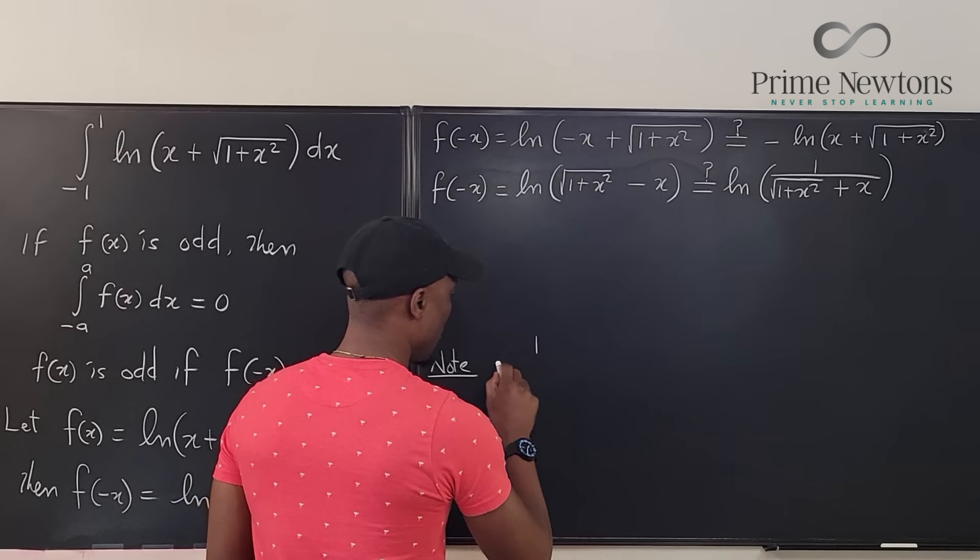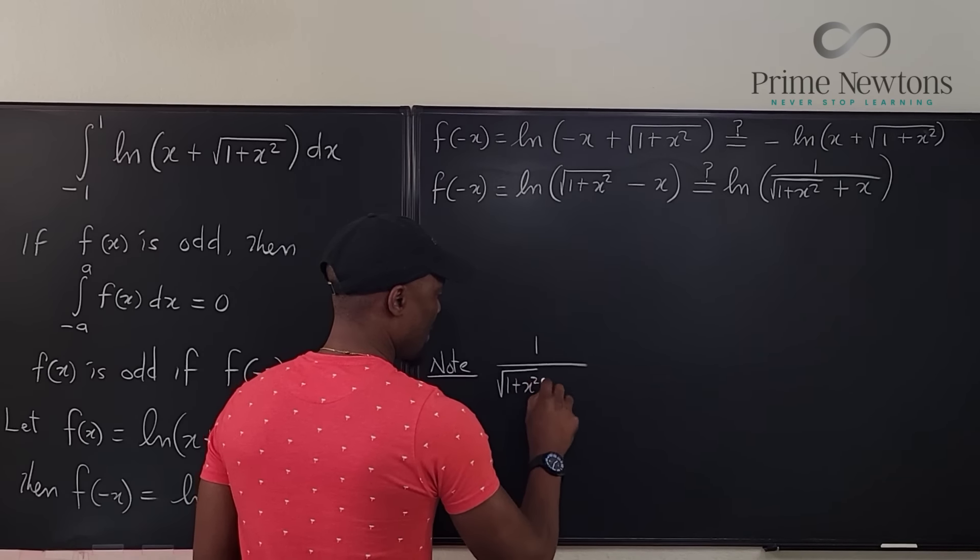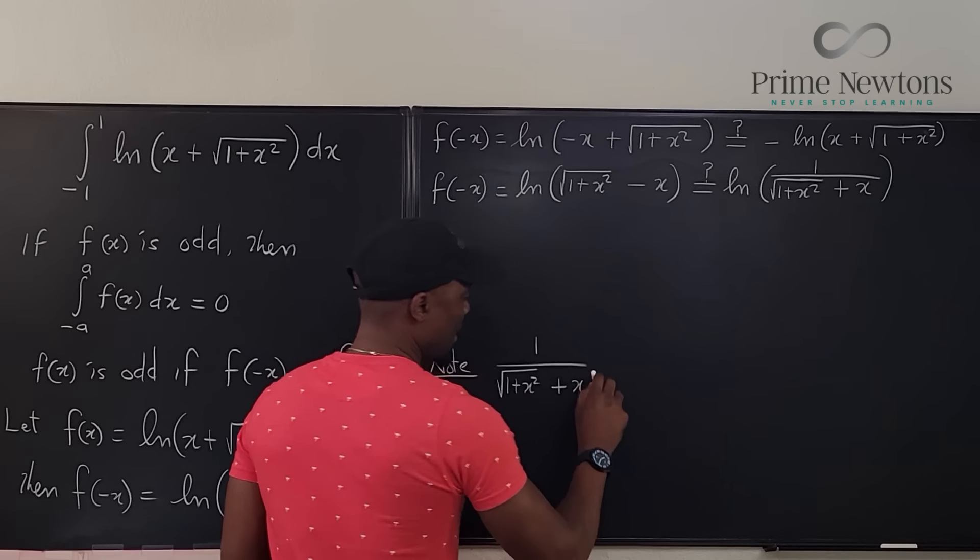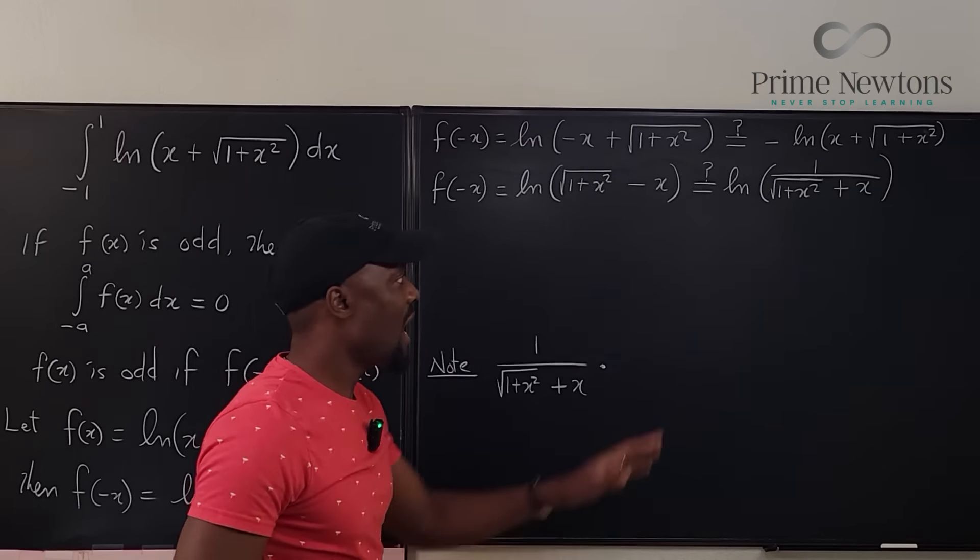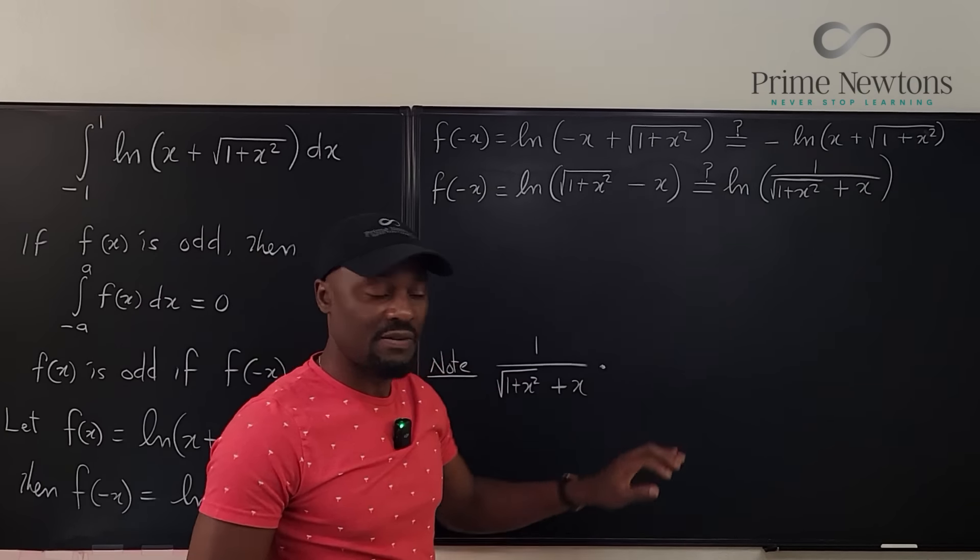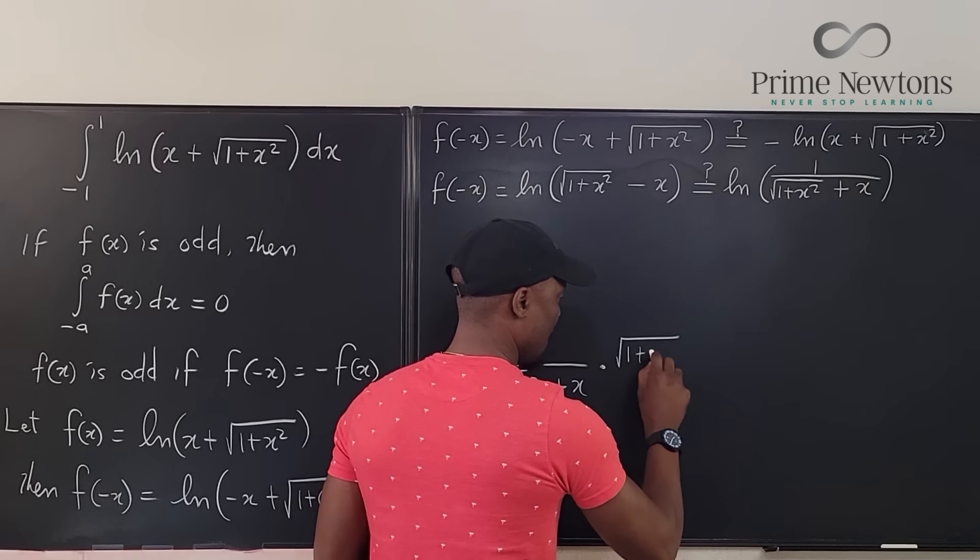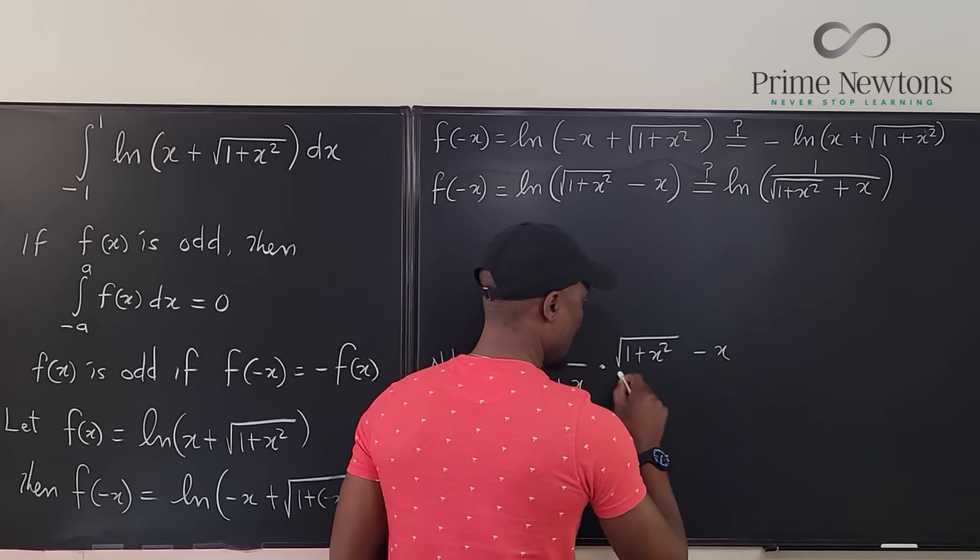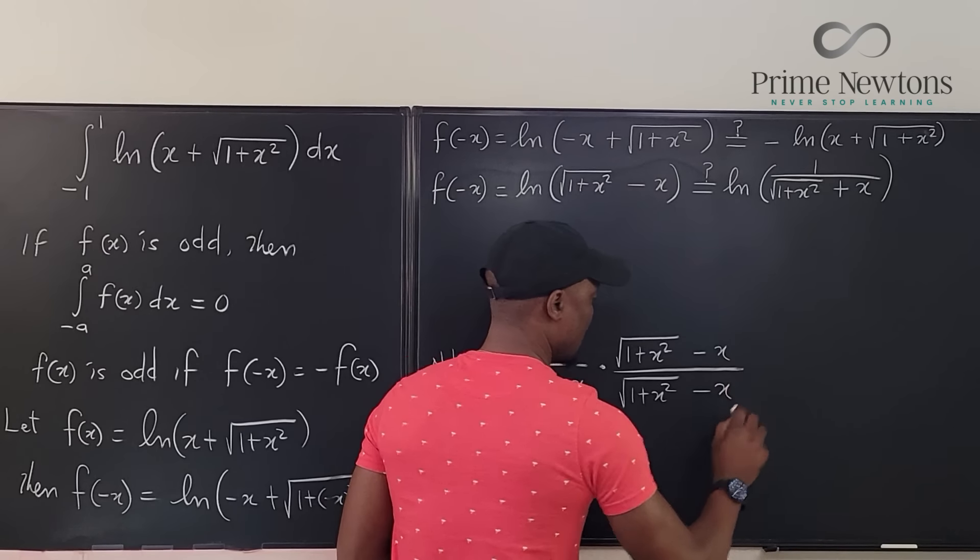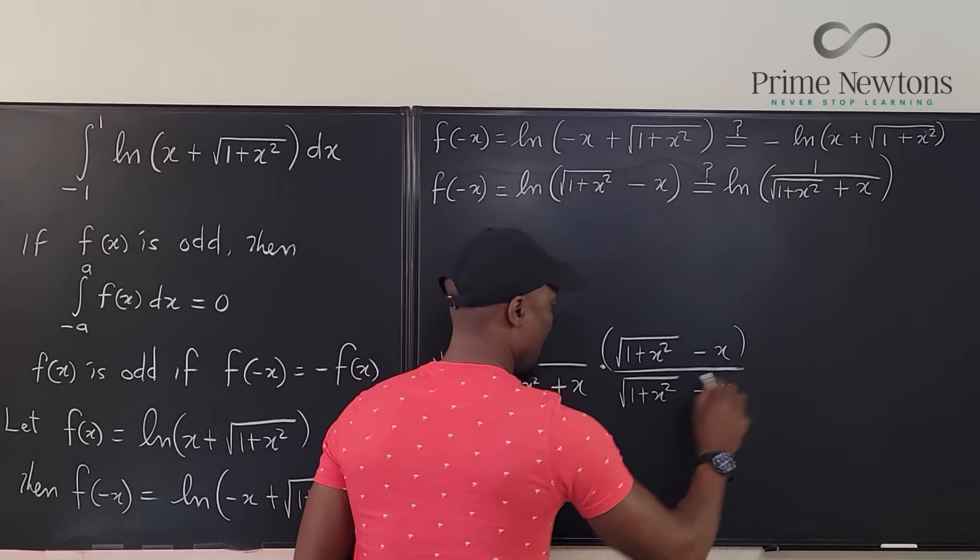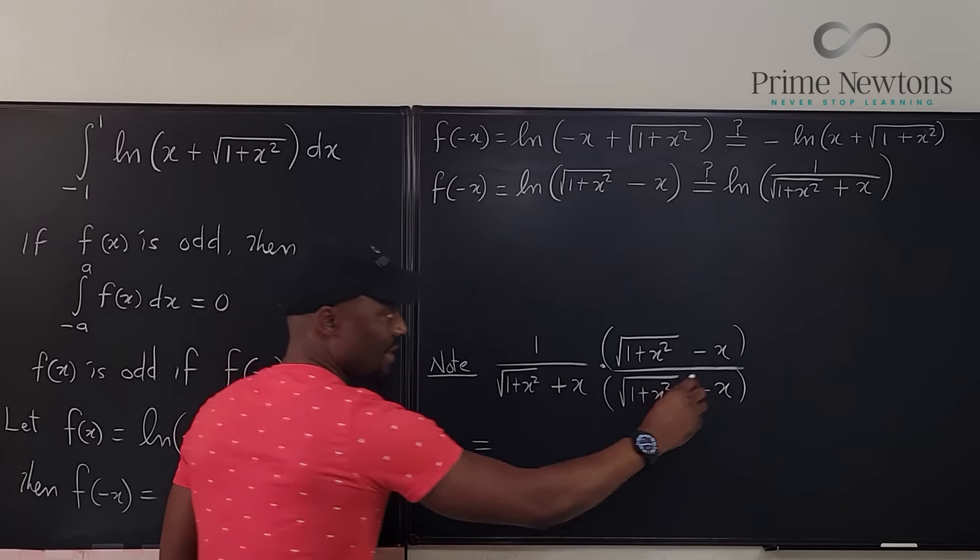That 1 over the square root of 1 plus x squared plus x multiplied by... I'm trying to just do the conjugate of this. I'll take the conjugate. I'm going to ignore the natural log. We'll go back and fill it up. If you multiply it by its conjugate, is the square root of 1 plus x squared minus x over the square root of 1 plus x squared minus x. So, this is what we're going to be multiplying.